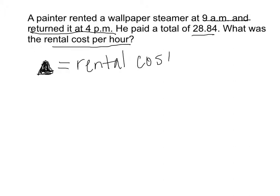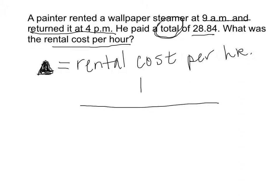What do we know in this problem? Looking back, we have a word that gives us something really important: our total. So let's take a look at our balance and how things are going to balance out. We know we have the $28.84 over here — that's the total, it's all by itself.